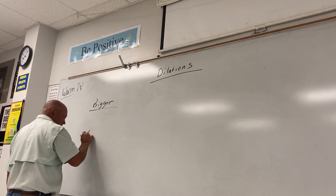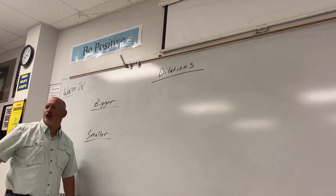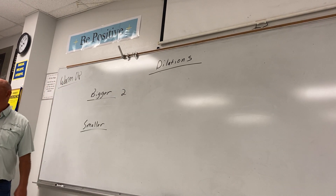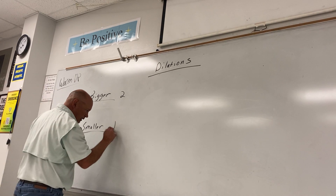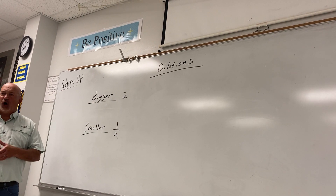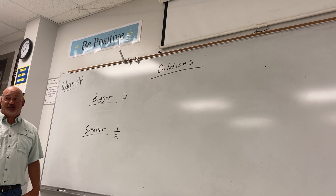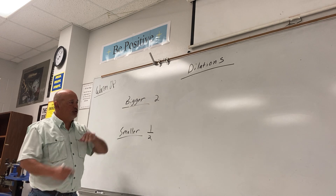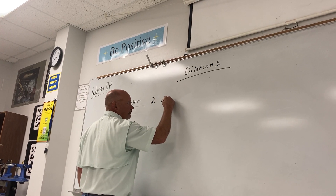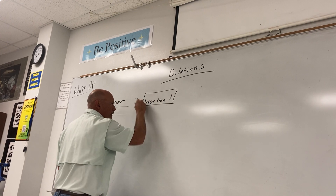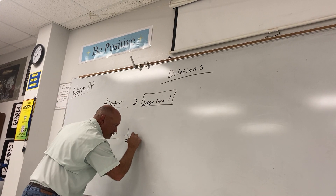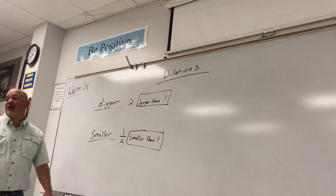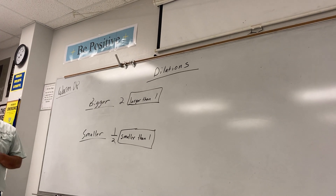Let's talk about how to make shapes bigger or smaller. If I multiply something by two, that's going to make it bigger. If I multiply something by one-half, it gets smaller. If I multiply something by one, it stays the same size. Bigger means multiplying by any number larger than one. Smaller means multiplying by any number smaller than one. Multiplying by one gives you the exact same size.